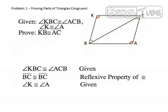And then we're going to pull in our second piece of given information and say that angle K is congruent to angle A.